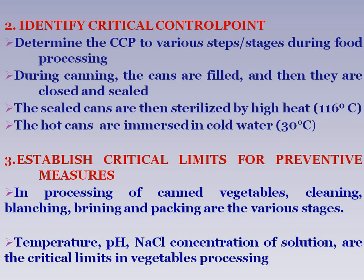The second principle is to identify critical control points at various steps and stages during food processing. For example, during the canning process, cans are filled, closed, and sealed. The sealed cans are then sterilized by high heat at 116°C, and the hot cans are immersed in cold water at around 30°C.